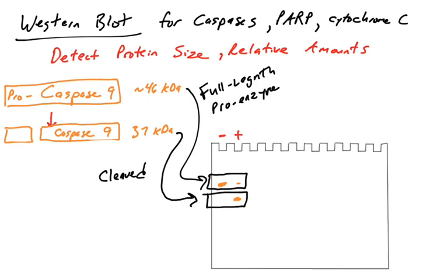When you're reading research articles, you will sometimes see a Western blot for a caspase like caspase 9. Depending on the scientist and the antibody being used, you might just see the full-length version or the cleaved version — sometimes both. Either way, those are indicators of whether or not apoptosis is occurring. If the full-length version is decreasing in intensity, it is being cleaved. If the cleaved version is appearing or increasing in intensity, caspase 9 is being cleaved. Either one is an indicator that apoptosis is occurring.